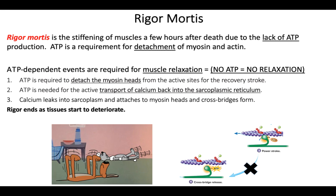One of the things that affects muscle contraction is death. When an animal dies, the muscles become stiff — they lock up in a contracted state — and that's called rigor mortis. Rigor mortis is the stiffening of muscles a few hours after death due to the lack of ATP.